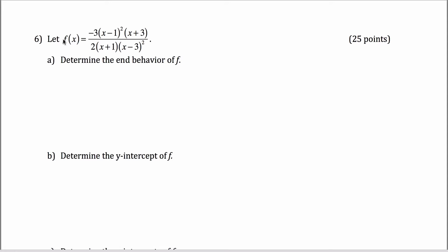Here's the last real problem — the non-extra-credit problem on the Fall 16 Math 111 final exam. We're given a rational function in its factored form, and we're first asked to determine the end behavior of this function.